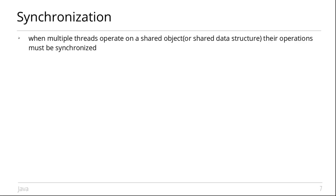When you have a single thread, you operate on an object. If you have an array, you insert a thread in the array and a thread in the data. When you have a data read, you insert data in the array.